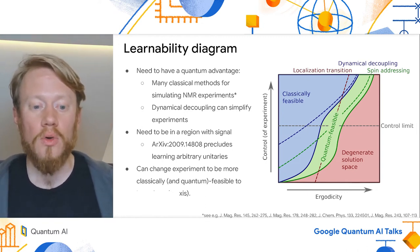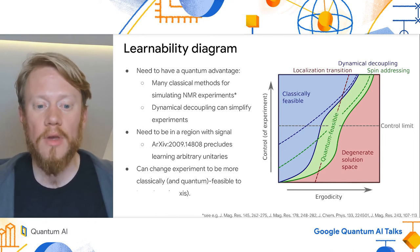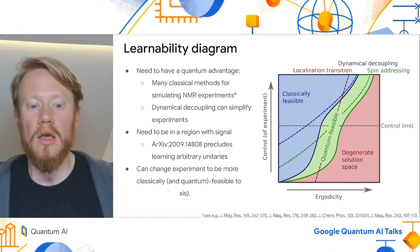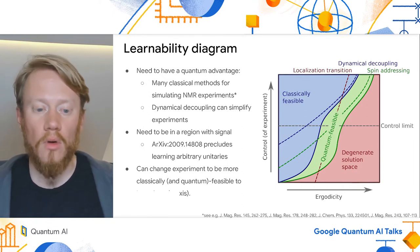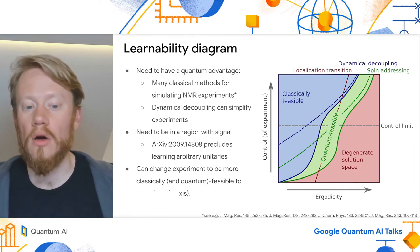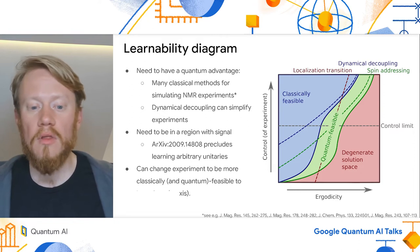But here, we run into the other critical issue. Strongly correlated systems tend to be highly ergodic or chaotic, and chaotic systems tend to not give strong signals to learn from. Indeed, recent results preclude learning scrambling unitaries on a quantum device.